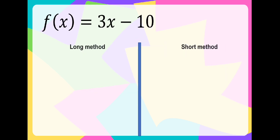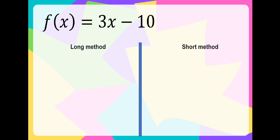Let us try to get the inverse of this example: f of x is equal to 3x minus 10. Using the long method, let us compute for the inverse of function. We have here a function: y is equal to 3x minus 10.